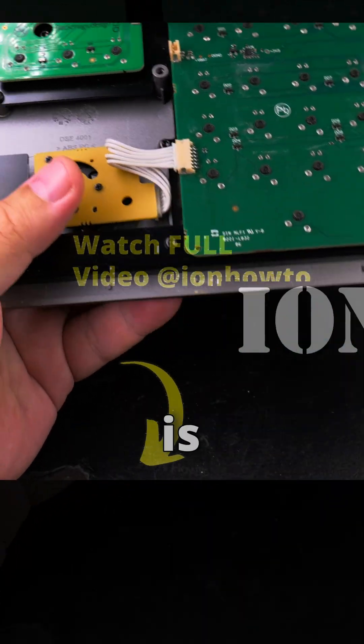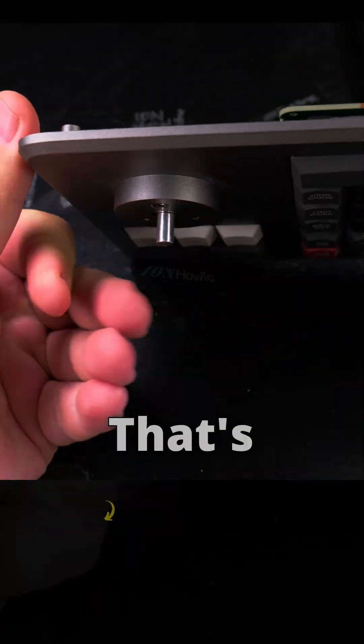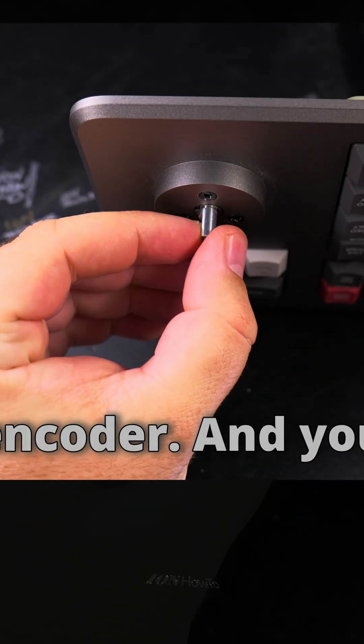What we really care about here is this part, this is where I'm going to replace the bearings. That's the actual magnetic encoder, and you can see how it's moving.